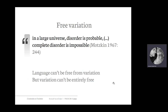This is consistent with a more general idea from the world of physics, philosophy, and mathematics, where the consensus is almost identical. Here's Mlodinow from 1967, a mathematician, who said something like: in a large universe, disorder is probable, but complete disorder is impossible.